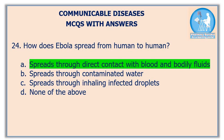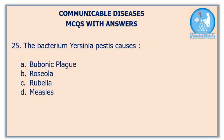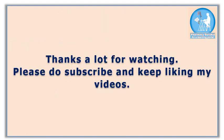It cannot be spread through contaminated water, and it also cannot be spread through inhaling infected droplets. Twenty-fifth question: the bacterium Yersinia pestis causes — the correct answer is option A: bubonic plague. Thank you so much.